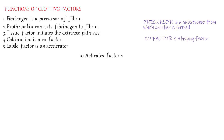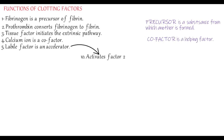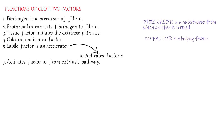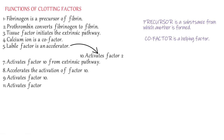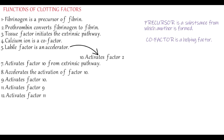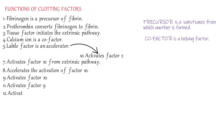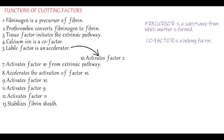Factor 5, the labile factor, is an accelerator. Factor 10 activates factor 2, and factor 5 helps accelerate this activation. So factor 5 is the accelerator and factor 10 is the activator. Factor 7 activates factor 10 from the extrinsic pathway. Factor 8 accelerates the activation of factor 10. Factor 9 activates factor 10, while factor 11 activates factor 9. Factor 12 activates factor 11. Factor 13, the fibrin stabilizing factor, helps to stabilize the fibrin sheet after it has been formed.